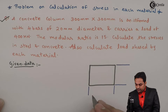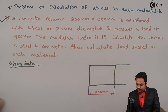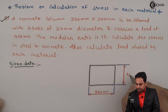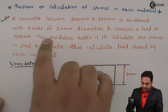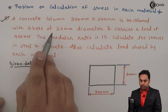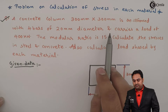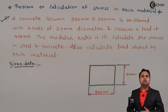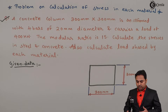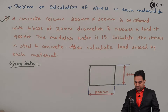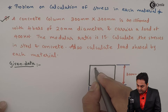The column is 300 mm by 300 mm. It is a concrete column reinforced with four bars of 20 mm diameter and carries a load of 400 kilonewton. This concrete column is being reinforced with the help of four steel bars.